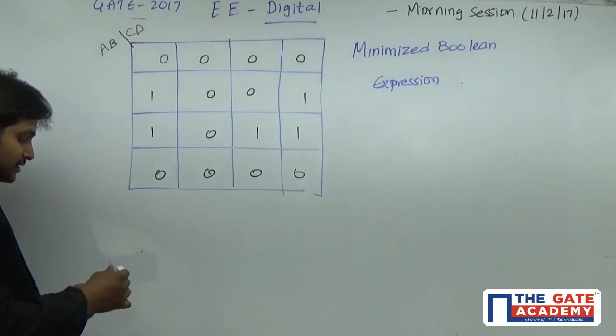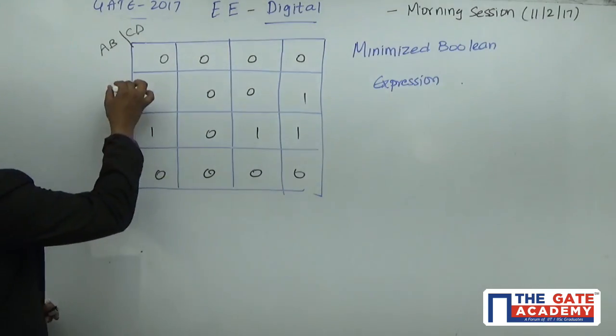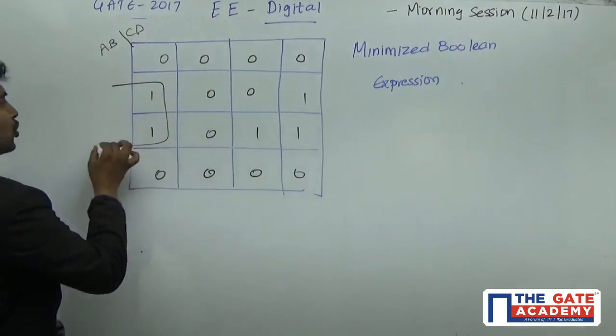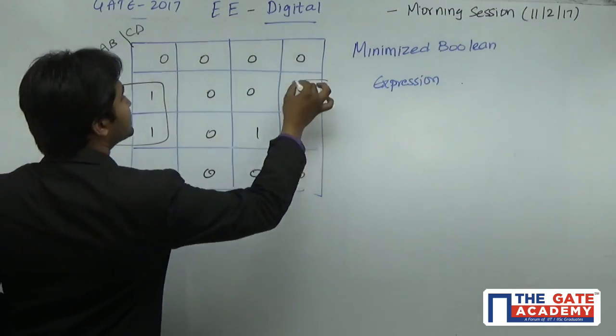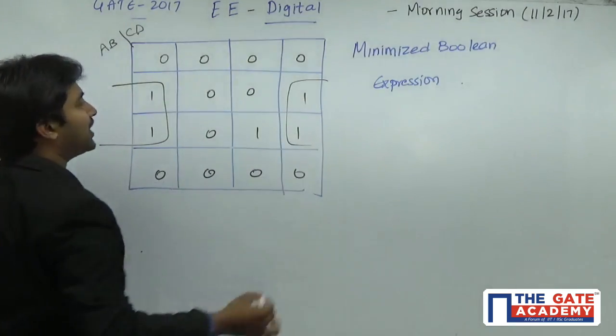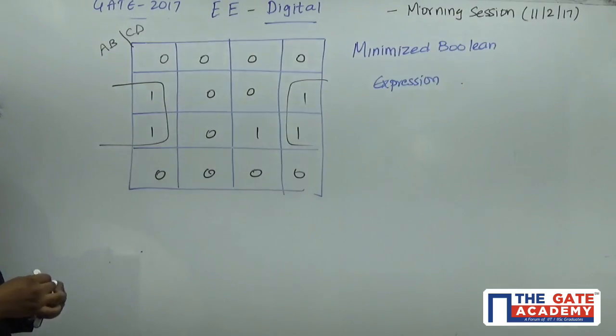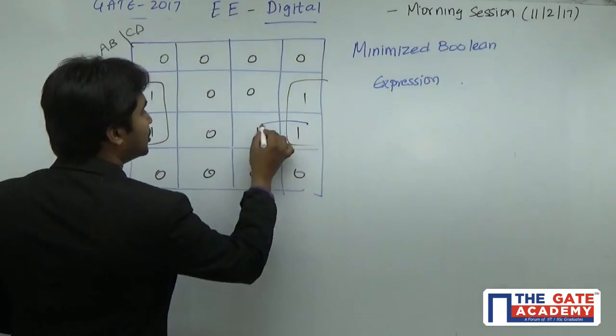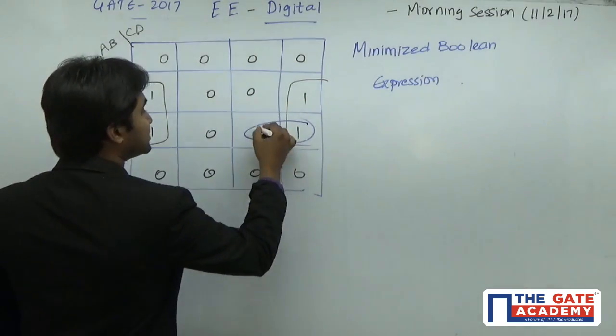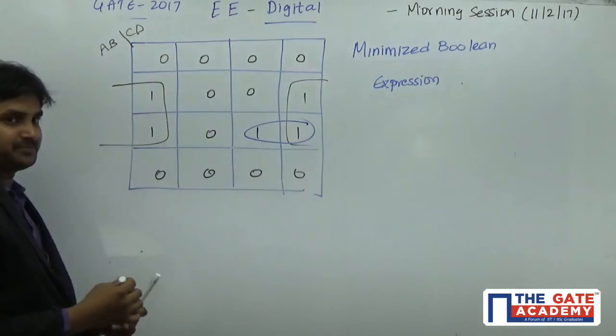Now fortunately here, a quad group is available. One quad group is available and the other group has to be a duet group, so that this is going to be counted.